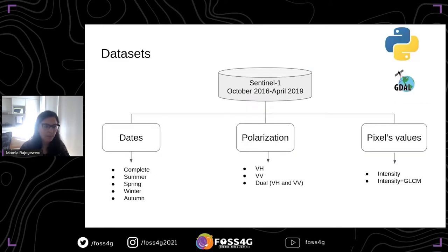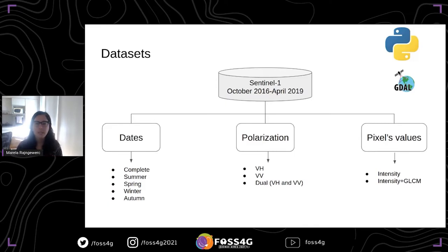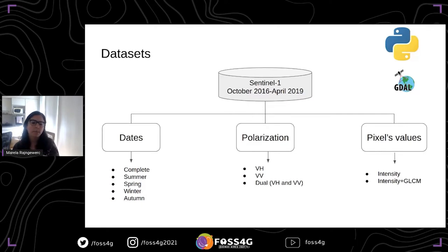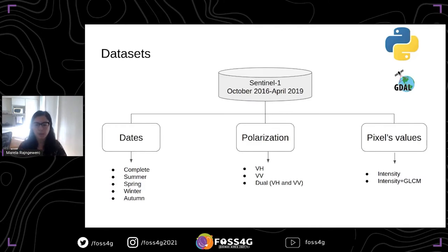Once we did all the pre-processing and texture calculations, we created different datasets to evaluate which was most useful for generating vegetation cover maps. We created a total of 30 datasets. Each dataset corresponds to a set of dates, a type of polarization, and a set of pixel values — either just the backscatter values, or the backscatter values together with the GLCM texture values. All this analysis was done using Python, with the GDAL library and also NumPy and Pandas.